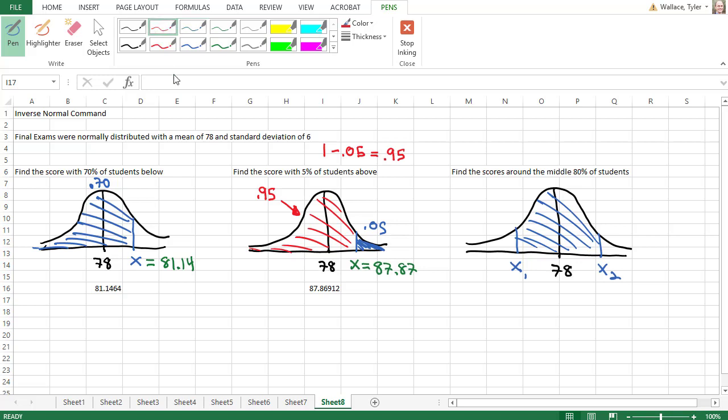We're going to have to find those two values separately. So first, we know that 80% is in the middle, and if we take 1 minus 80%, that leaves 20% on the outside. Because there's two tails, that 20% is split evenly on both sides. So we have 10% on the left and 10% on the right.